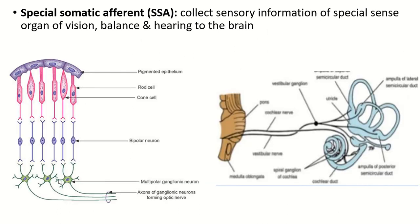Special somatic afferent. The bipolar neuron present within the retina and this is the optic nerve. So the visual information is passed through the optic nerve to the brain. Hearing and balance are also collected by the special somatic afferent fiber and transmitted to the brain.